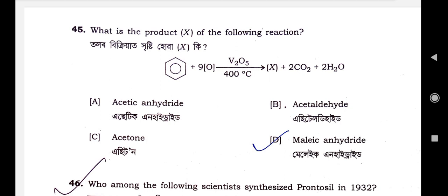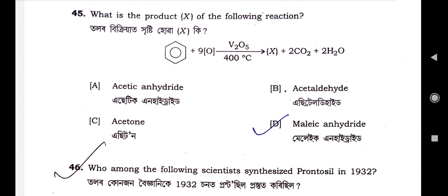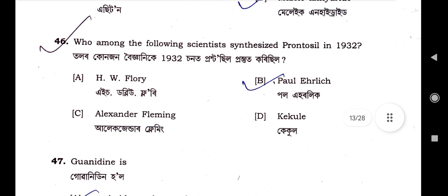Question number 45: What is the product X of the following reaction? Option D is the correct option — maleic anhydride will be the product. Benzene plus V2O5 in the presence of air at 400°C gives the product X plus two CO2 plus two H2O. After the reaction is completed, the product is option D, maleic anhydride. Options A, B, C are wrong.